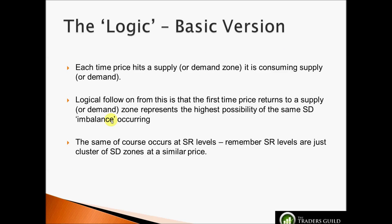From the first video: each time price hits the supply-demand zone it is consuming supply-demand. Therefore it holds to reason that the first time price comes back to a supply-demand zone it has the highest probability of having that same supply-demand imbalance and being rejected. Remember, an SR level is just a cluster of supply-demand zones at a similar price. Now, before we move on to order flow dynamics, we need to take a step back and think about mindset — specifically how a professional trader thinks compared to a novice trader.